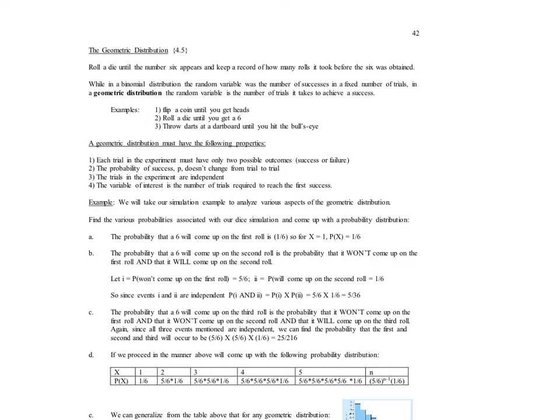You look at the example here, it says roll a die until the number six appears, and keep a record of how many rolls it took before the six was obtained. Because a die has six sides, numbers one through six, we want to keep track of how many times it would take before you obtain a six. While in a binomial distribution, random variable was the number of successes in a fixed number of trials, in a geometric distribution, the random variable is the number of trials it takes to achieve a success.